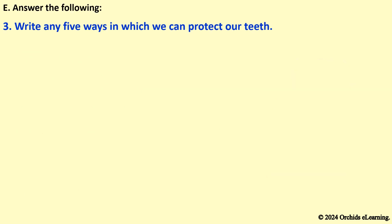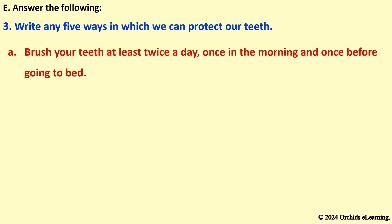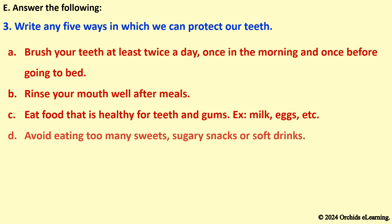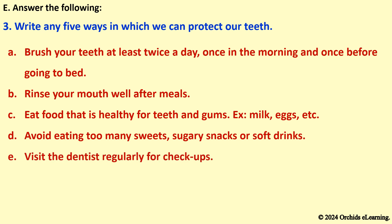Write any five ways in which we can protect our teeth. Brush your teeth at least twice a day, once in the morning and once before going to bed. Rinse your mouth well after meals. Eat food that is healthy for teeth and gums, such as milk and eggs. Avoid eating too many sweets, sugary snacks, or soft drinks. Visit the dentist regularly for check-ups.